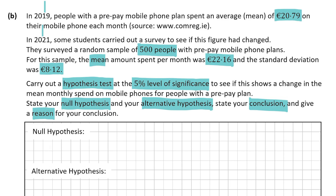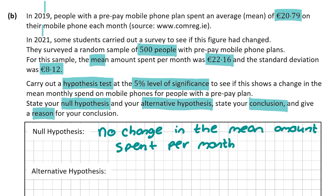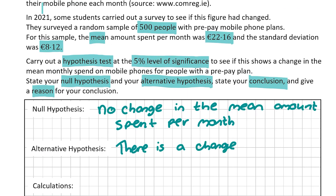The null hypothesis means the investigators fail to prove what they set out to show — so here it states there is no change in the mean monthly spend. The alternative hypothesis is the opposite: the investigators succeed and prove there is a change in the mean amount spent per month.